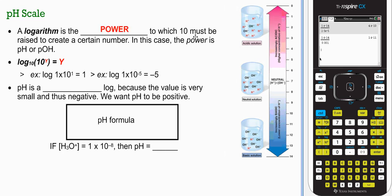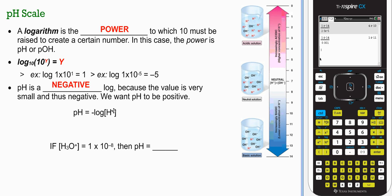A logarithm is a power to which 10 must be raised to create a certain number. In this case, power is pH or pOH. Log base 10 of 10 to the power of a number is that number. If negative 14 is our number, then obviously we'd get a negative value. So pH is a negative log because we want to work in a scale that's a positive value. We do the negative log of the concentration of hydrogen ions to get pH. Let's press this into the calculator. Negative log, 1 double E negative 8, and we should get a pH of 8.